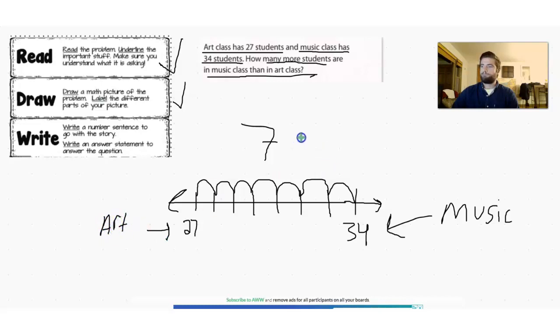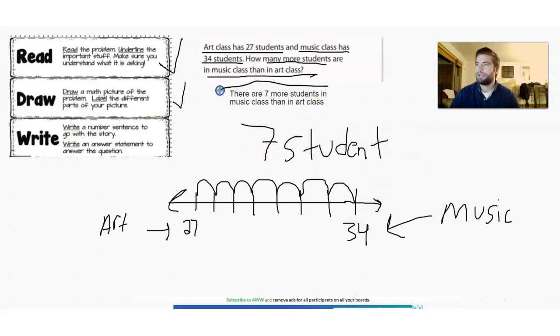But now that we have our answer, seven students, it's time to write our final answer. And I'm going to get my text box out to write this in a more efficient way. Okay, so I typed out my answer and I wrote, there are seven more students in music class than an art class. And what I like to do here is circle my answer when I'm done.